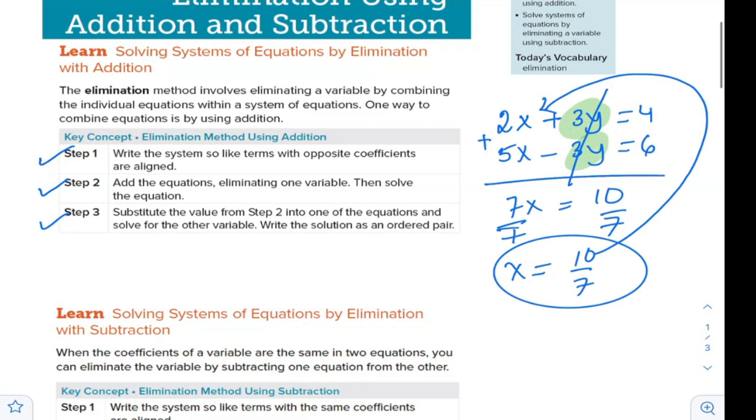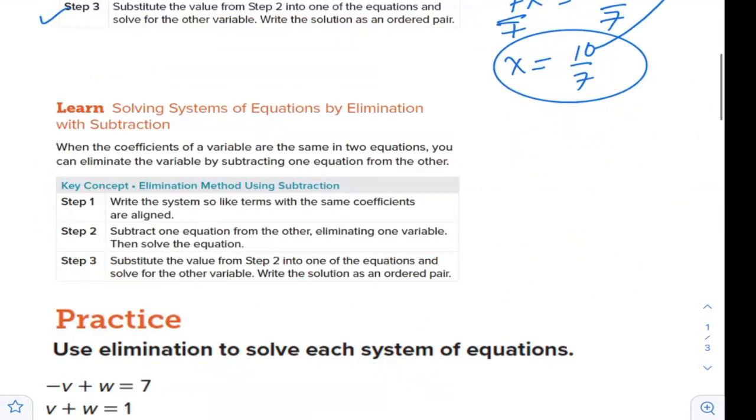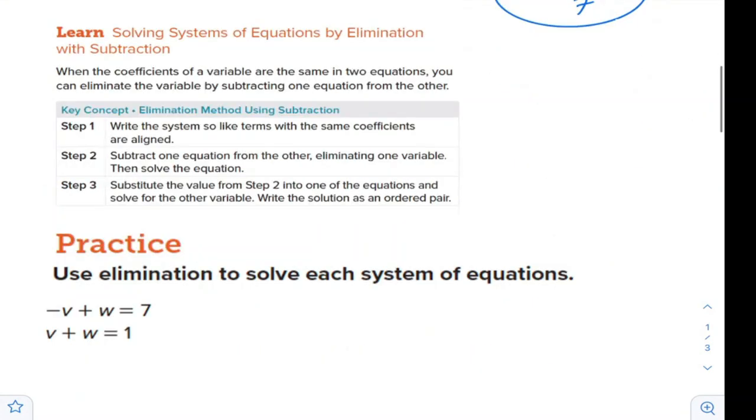Here we can also eliminate, but with subtraction. If you have 2x plus 3y equals 6, and the other one is 5x plus 3y equals 10, now you cannot eliminate the y by adding. If you add, 3y plus 3y will give 6y. So we will subtract.